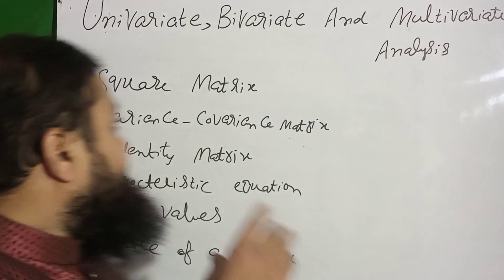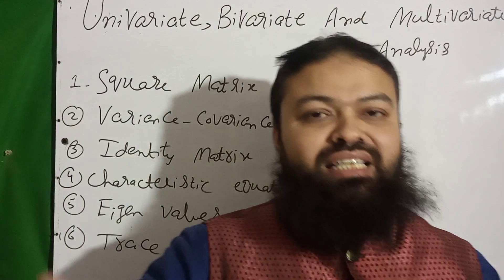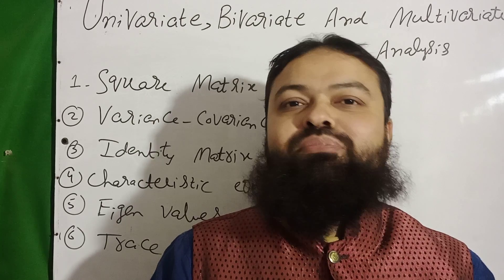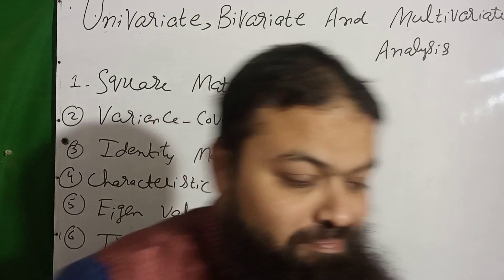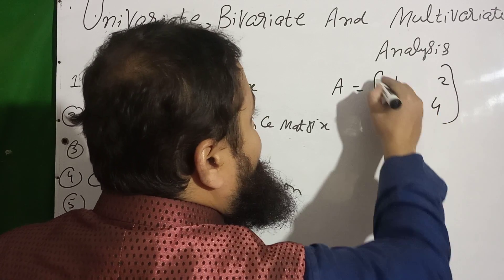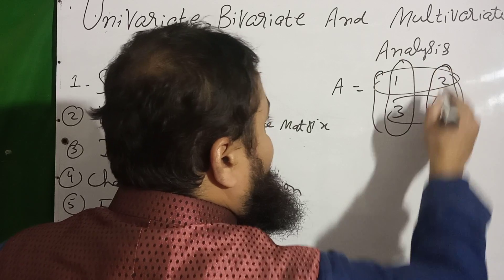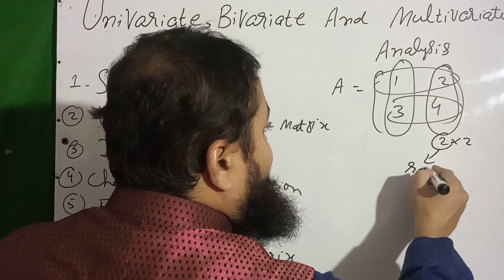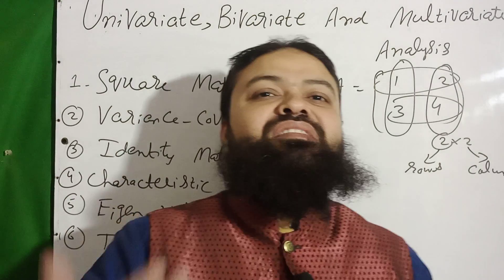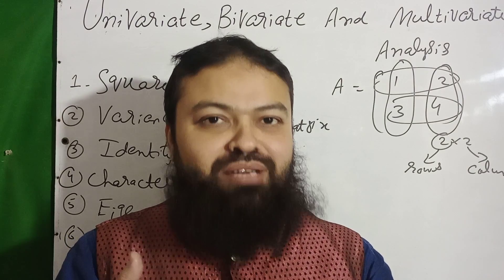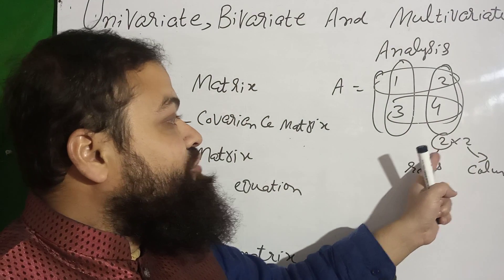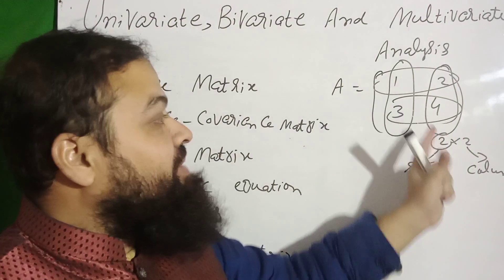Now I will discuss the first concept: the square matrix. As we discussed in classes 9th, 10th, and FSc, it is a rectangular form of numbers in which we have an equal number of rows and columns. For example, matrix A = [1, 2; 3, 4] has two rows and two columns, so its order is 2×2. A square matrix has the same number of rows and columns.